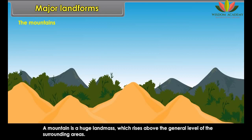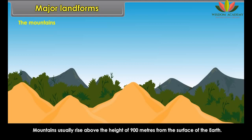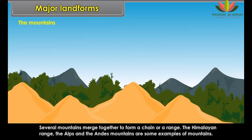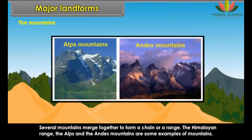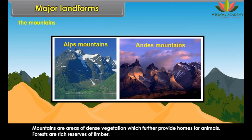Major landforms. The land mass has different types of landforms. These are generally grouped into mountains, plateaus and plains. A mountain is a huge land mass which rises above the general level of the surrounding areas. Mountains usually rise above the height of 900 meters from the surface of the earth. Several mountains merge together to form a chain or a range.